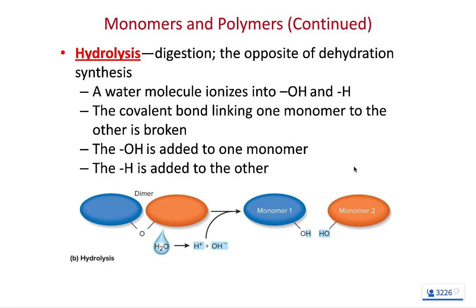When we look at these biomolecules, they're made of lots of repeating subunits. We call the subunit a mer. So we can have a monomer — a one-subunit molecule — a dimer, a trimer, or we can have a polymer, a many-subunit molecule.